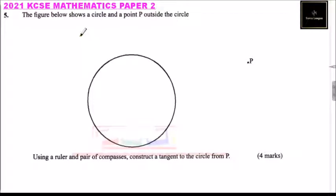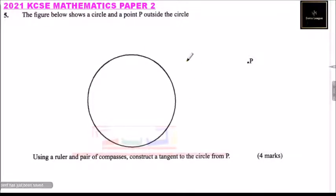This is question number 5. We are told the figure below shows a circle and a point P outside the circle. Using a ruler and a pair of compasses, construct a tangent to the circle from P.